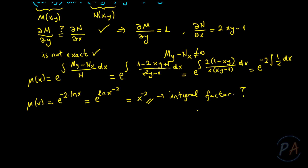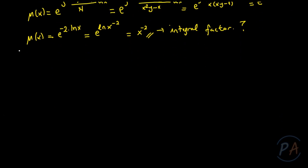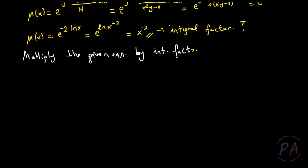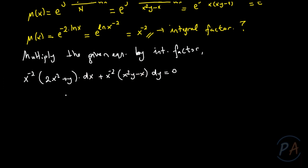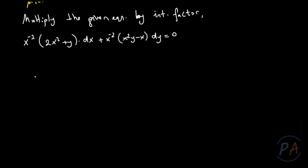The integrating factor means that if I multiply both sides of the given equation by this integrating factor, the resultant equation will be exact. When I multiply the given equation by x^(-2), the result is: x^(-2)(2x² + y)dx + x^(-2)(x²y - x)dy = 0.